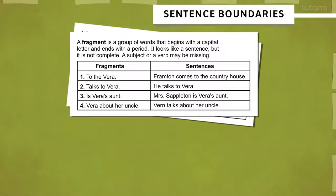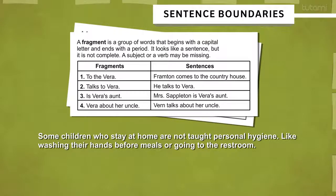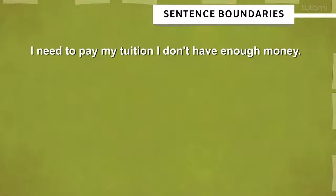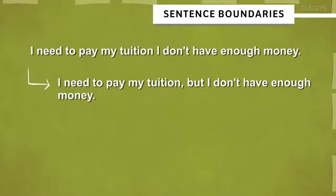Sentences that lack proper boundaries can make it difficult to know where a sentence begins or ends. This can happen not only when subjects or verbs are forgotten, but also when proper punctuation goes missing. Take this example: "I need to pay my tuition. I don't have enough money." Versus, "I need to pay my tuition, but I don't have enough money." See how with the addition of a comma and the word 'but,' the sentence reads much more smoothly?